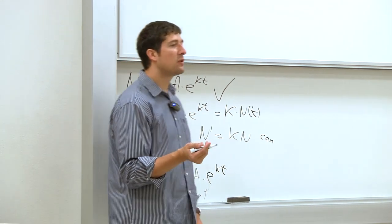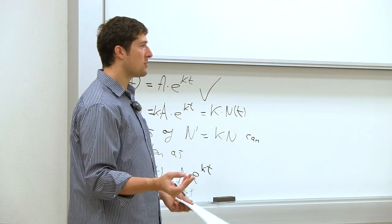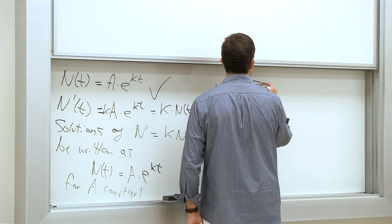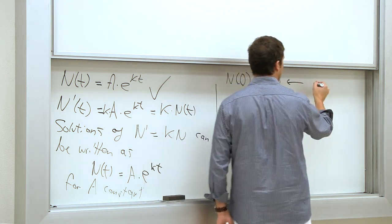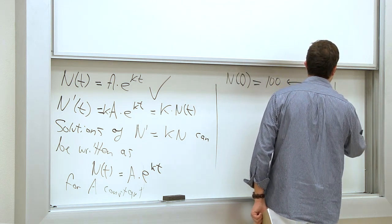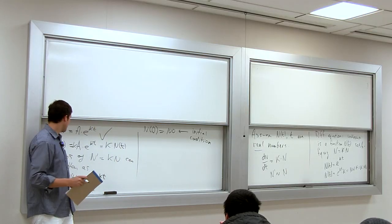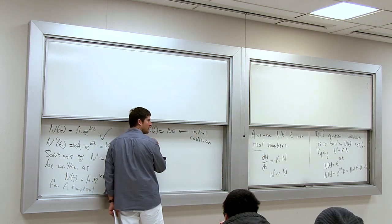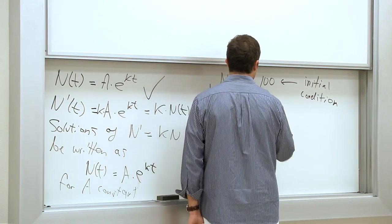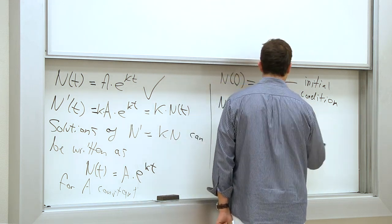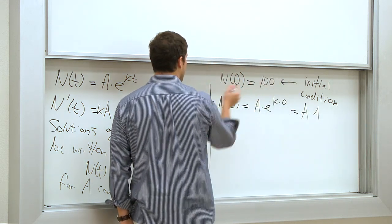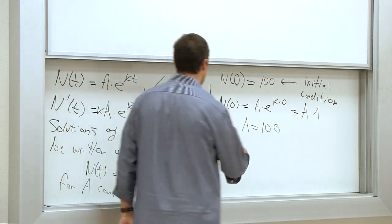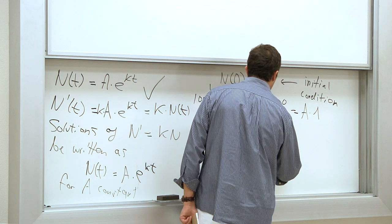Usually we provide an initial condition — the population at time 0. For example, N(0) = 100. The initial condition is used to figure out the constant A. Plugging in: N(0) = A·e^(k·0) = A·1 = 100. So A = 100, and N(t) = 100·e^(kt).